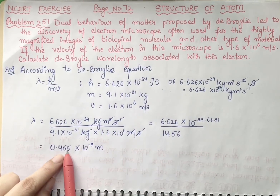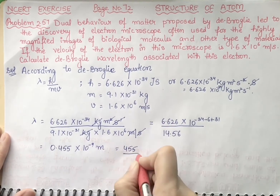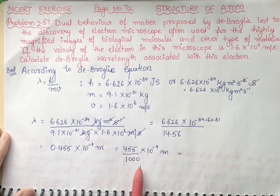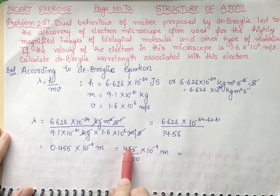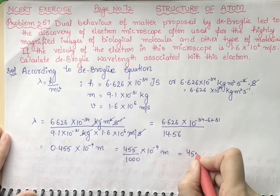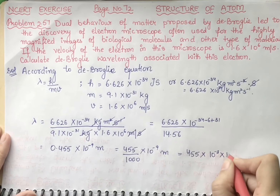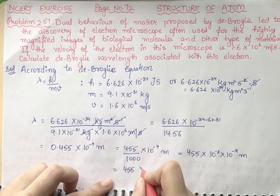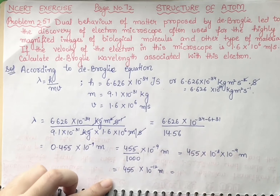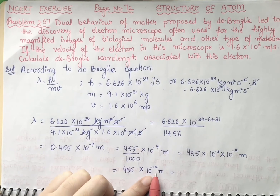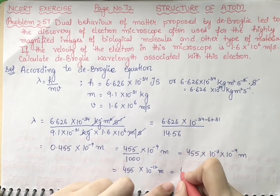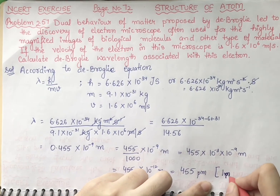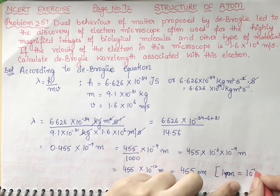We can rewrite 0.455 × 10⁻⁹ as 455/1000 × 10⁻⁹ = 455 × 10⁻³ × 10⁻⁹ = 455 × 10⁻¹² meter. Since 1 picometer = 10⁻¹² meter, the final answer is 455 picometers.